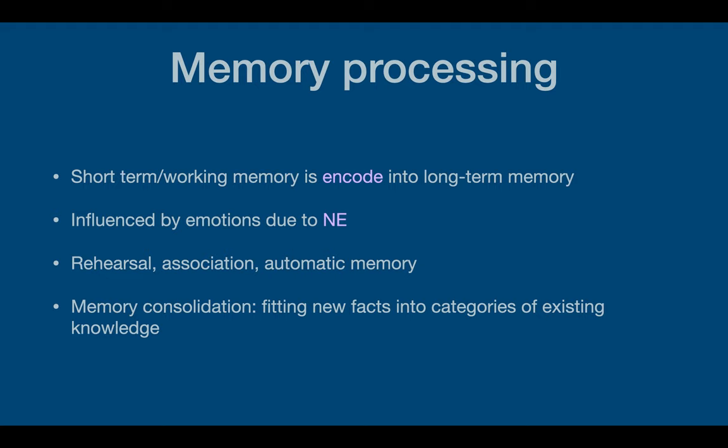Short-term or working memory is encoded into long-term memory. Sometimes it's automatic, but most of the time it takes some effort — repetition, repetition, repetition. It's influenced by emotions due to norepinephrine as the neurotransmitter. It's encoded through rehearsal along with association, and then eventually it becomes automatic. Memory consolidation is fitting all the pieces into categories of existing knowledge — like when you discover a new type of shoe and fit it into the category of all the existing types of footwear you already know.